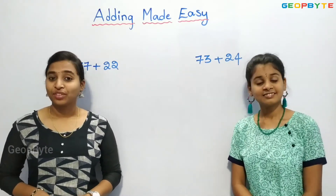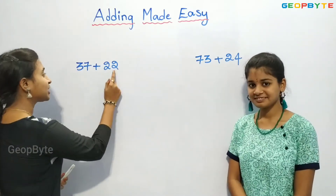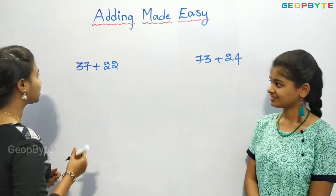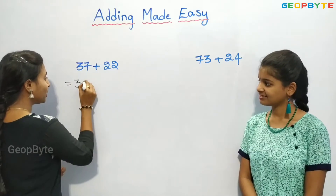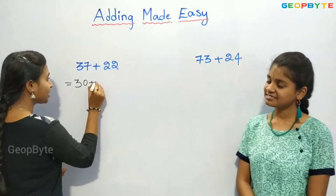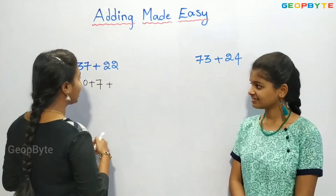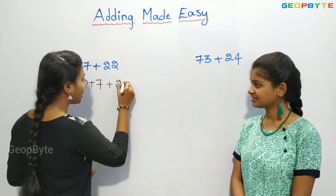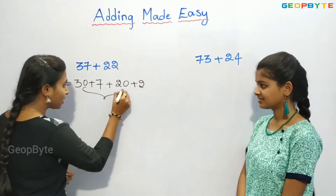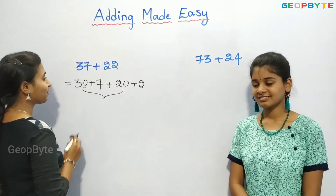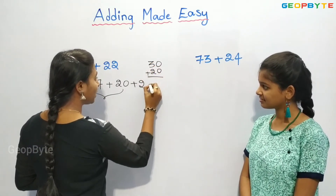Let us see one more problem using the same method. We have 37 plus 22. We divide 37 into 30 plus 7, and we divide 22 into 20 plus 2. Now let us add the tens: 30 plus 20.